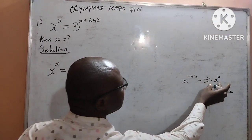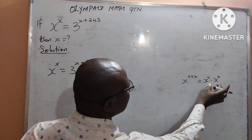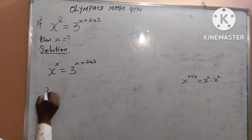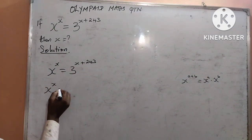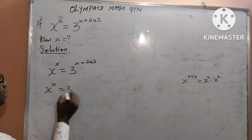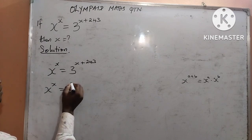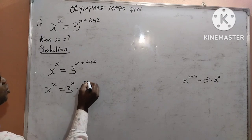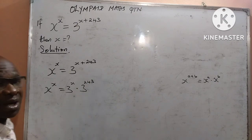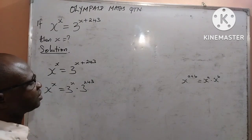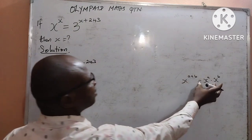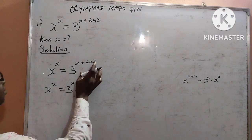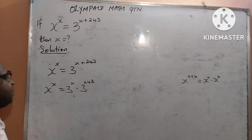We are now going to write it the way it appears on the right side of the law. Splitting the right hand side, I have x raised to x equal to 3 raised to power x multiplied by 3 raised to power 243. We have now applied this multiplication law of indices to the right hand side.